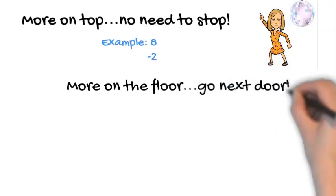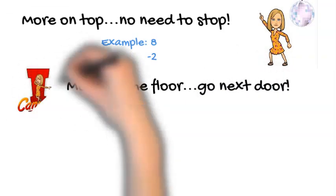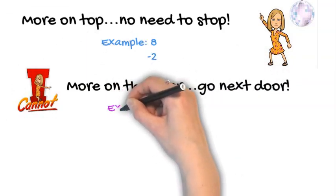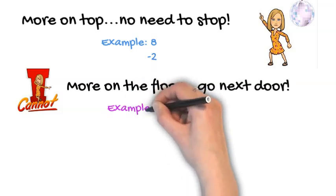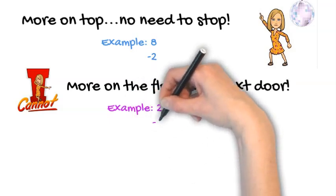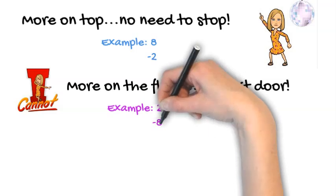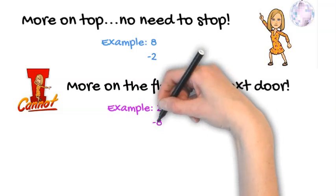More on the floor? Go next door. Now, here's the problem. We would have 2 and take 8 away. If you had 2 cookies, could you give me 8? No, it's impossible. So that's when we need to go get help from our neighbors.